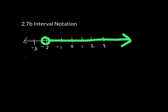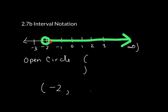Whenever you have an open circle, use a parenthesis — either at the beginning or the end. Whenever you have an arrow, that means it's going towards infinity, and infinity will always get a parenthesis. An open circle means the number itself is not included. So I would write this in interval notation as parenthesis negative 2, because I'm starting at negative 2, not including it, going all the way towards positive infinity — so positive infinity with a parenthesis.